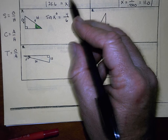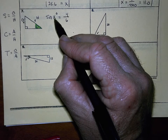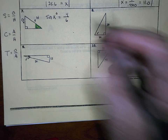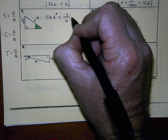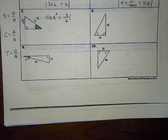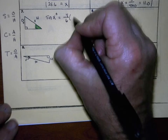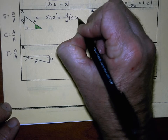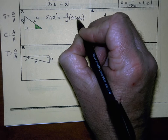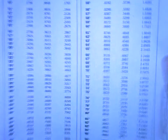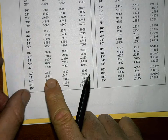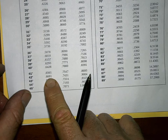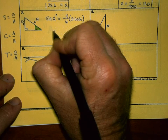Since X is an angle here, I first convert 4 over 6 into a decimal: 4 divided by 6 equals 0.6666. Then I find that decimal value under sine in my table. The closest value gives me X equals approximately 42 degrees for number seven.